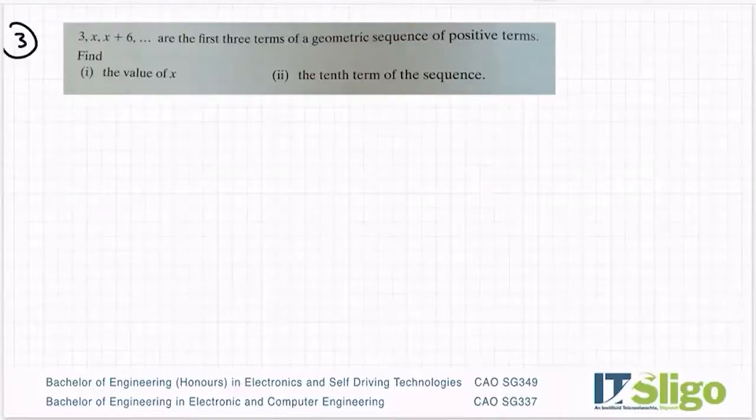Let's have a look at this one. 3, x, x plus 6 are the first three terms of a geometric sequence of positive terms. Find (i) the value of x, (ii) the 10th term of the sequence.